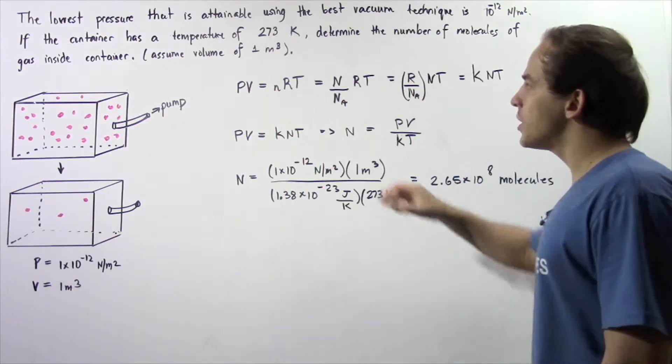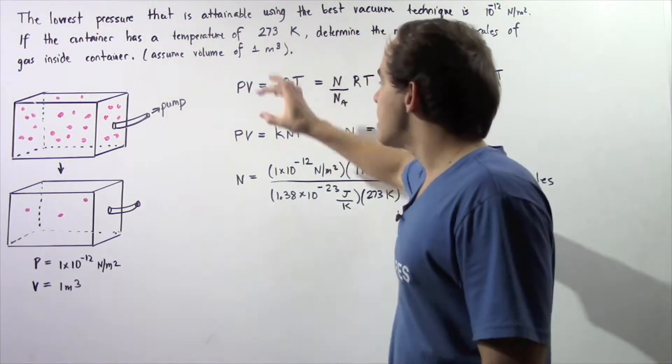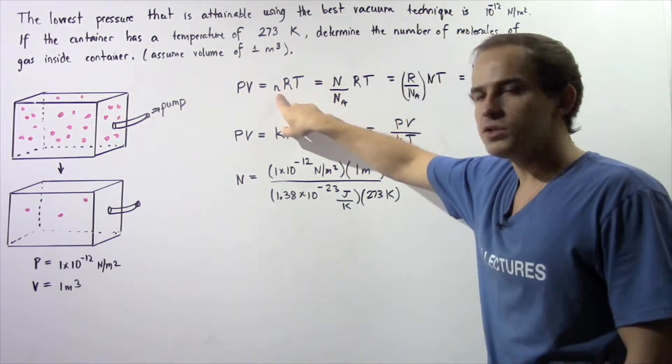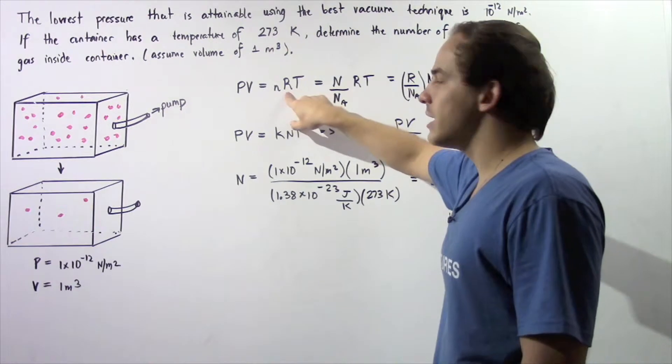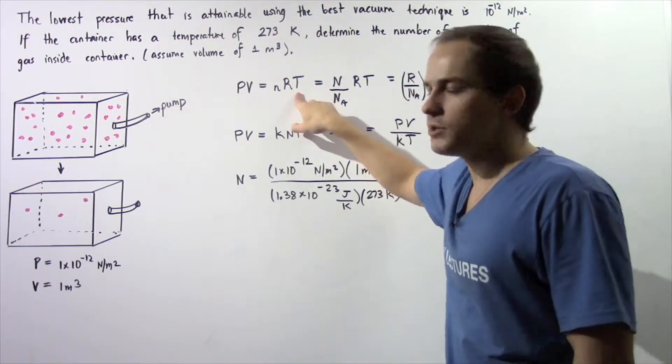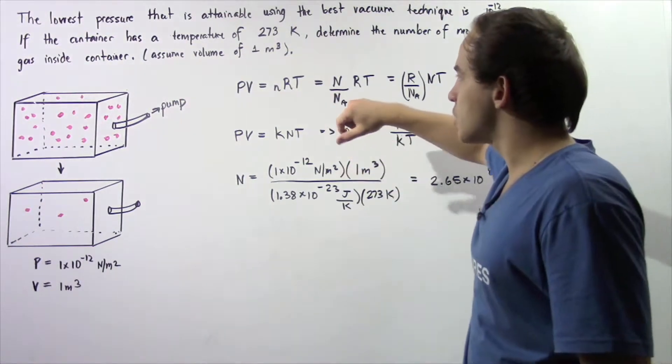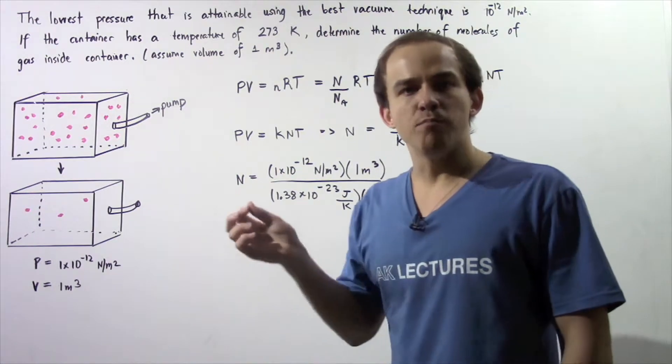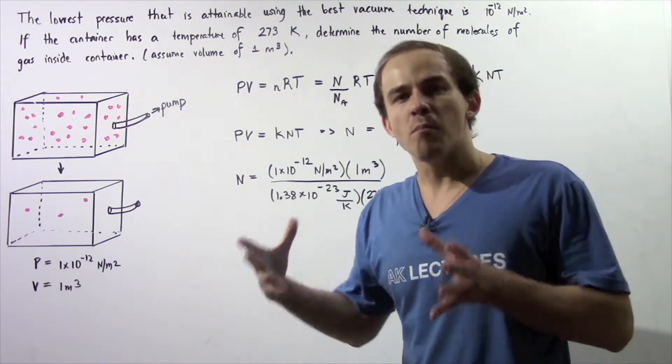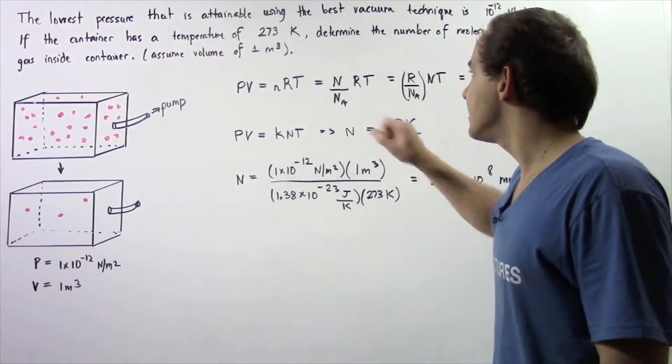So let's begin with the ideal gas law. The ideal gas law states that the pressure times the volume is equal to the number of moles of gas multiplied by the universal gas constant R multiplied by the temperature given in kelvins. Now recall from the previous lecture that n, the number of moles of gas, is equal to the total number of molecules N divided by Avogadro's number N_A.